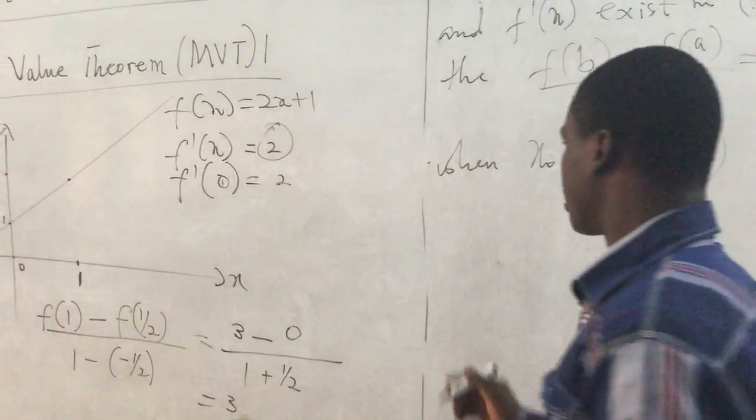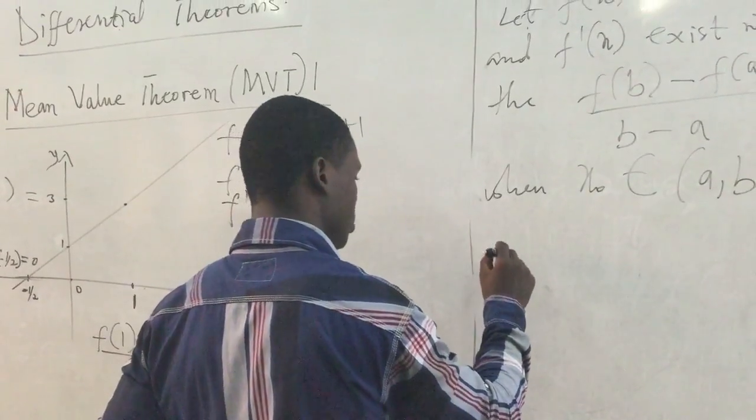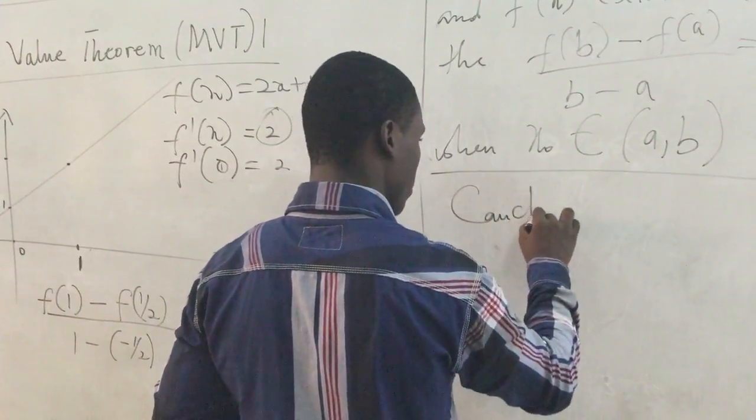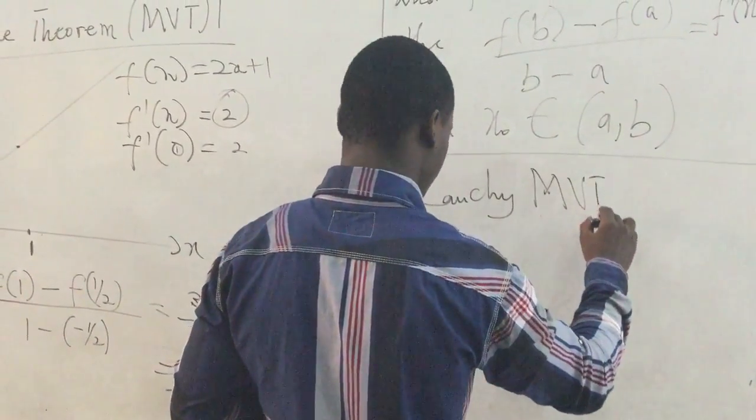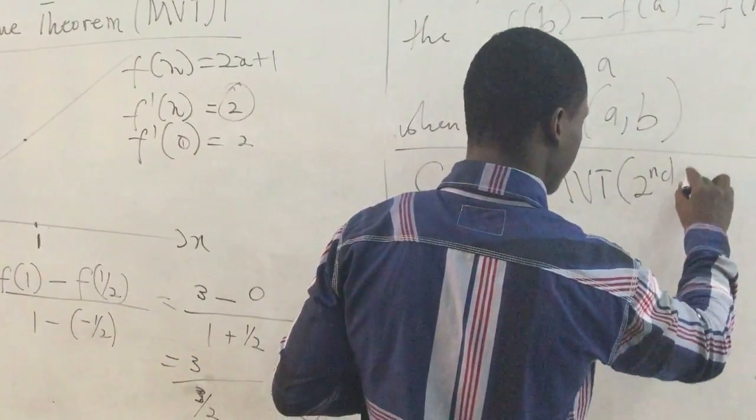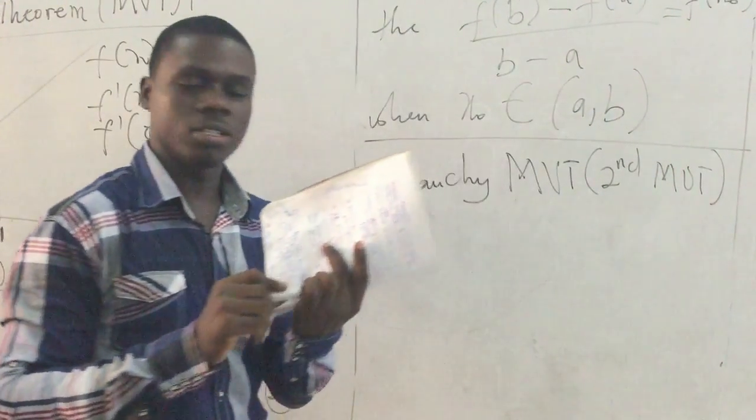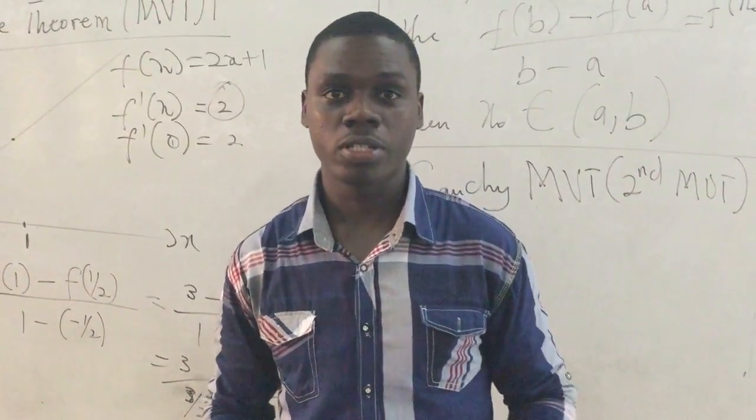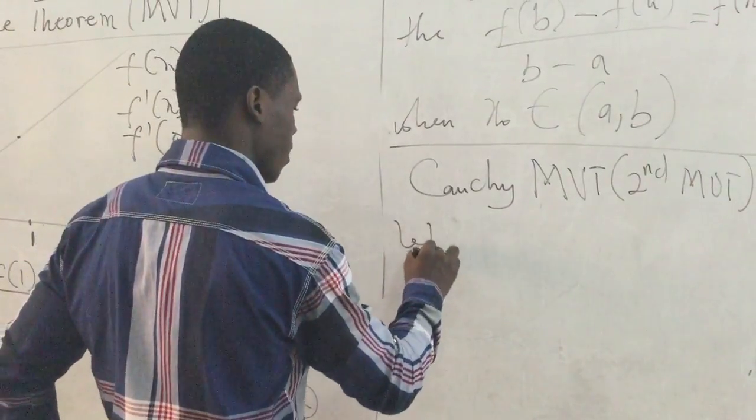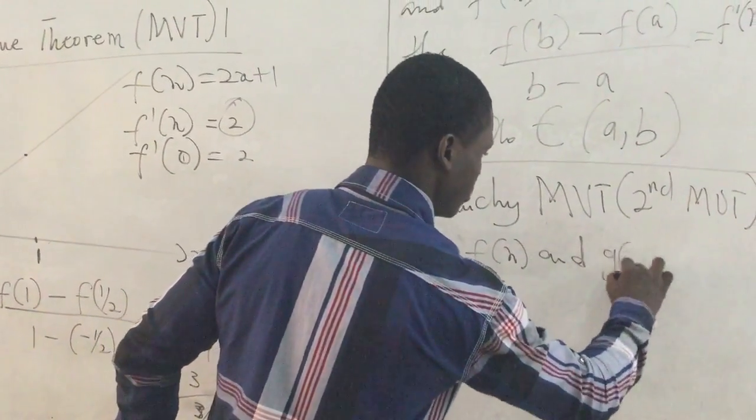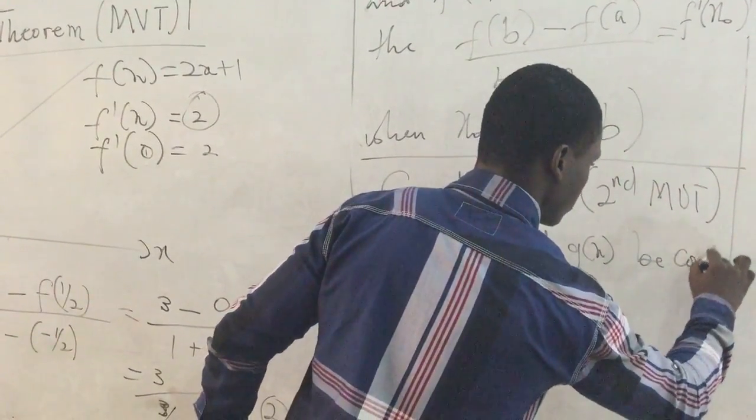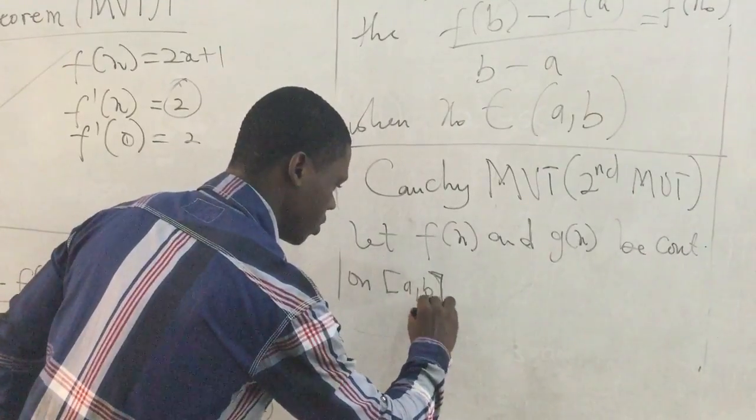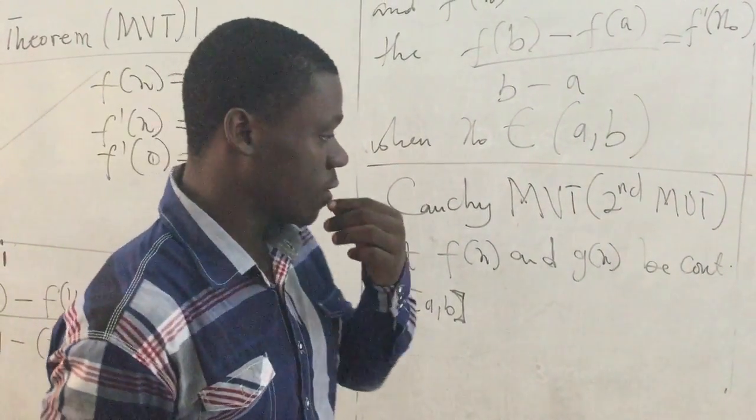So that is the Mean Value Theorem. Then you also have the Cauchy theorem. So let's end this one here. At this point Cauchy is having other ideas, so instead of looking at just one function, we actually want to look at the situation where we have two functions. It says that let f and g be continuous on the closed interval [a, b]. So let the two functions be continuous on the closed interval [a, b].